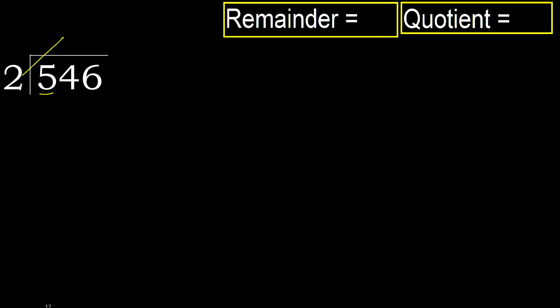Multiply by which number is nearest to 5, but not greater? 2. Multiply by 3 is 6. 6 is greater. Multiply by 2 is 4, which is not greater. Okay. Subtract: 5 minus 4 is 1.